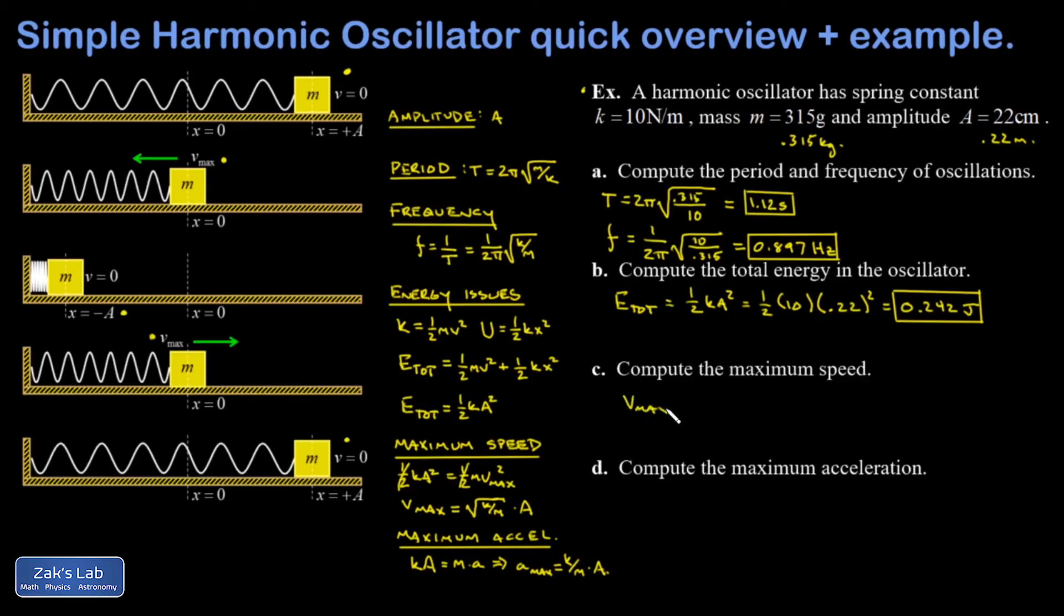Part C: compute the maximum speed. So we'll just use the little formula I derived: v max is root k over m times the amplitude. Finally we want the maximum acceleration, and again I'll just use the little formula I derived. That's just from applying Hooke's law when the position is equal to plus or minus A.